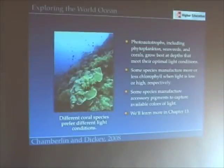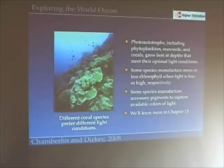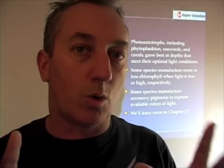Photoautotrophs — including phytoplankton, seaweeds, and corals — grow best at the depths that meet their optimal light conditions. If you've ever kept corals in a saltwater tank, you know that some corals are high-light corals that want to live near the surface and some are low-light corals. Corals have symbiotic algae inside their polyps, and it's the energy from light absorption by those algae that allows corals to build coral reefs. Similarly, we have sun-adapted and shade-adapted phytoplankton.